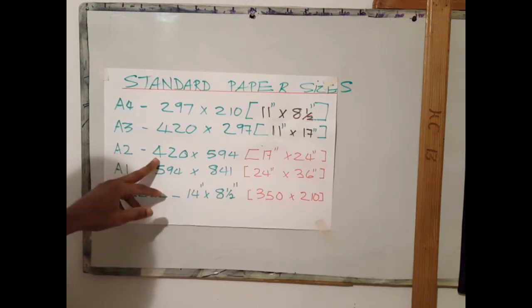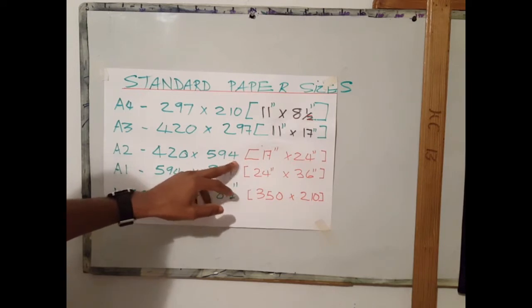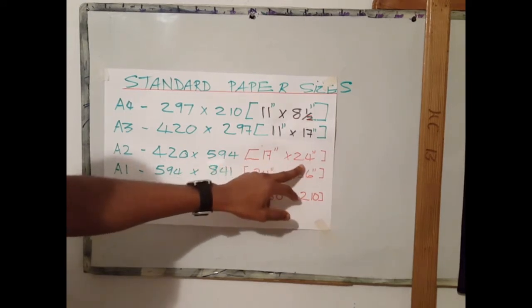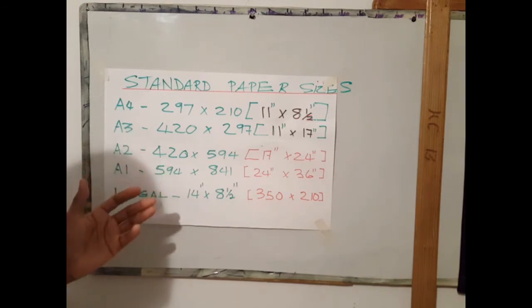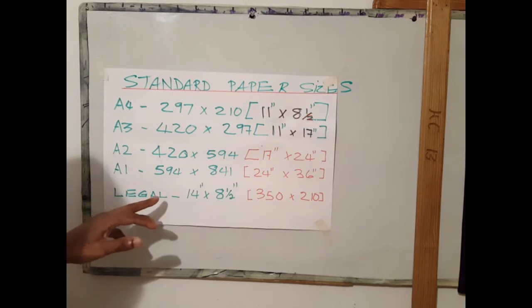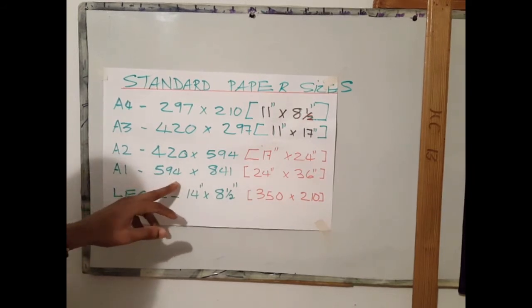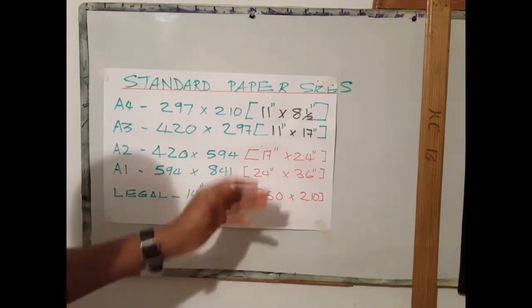A2 paper is 420 millimeters by 597 or 17 by 11 inches. This is more common for architectural drawing for buildings. A1 has a dimension of 594 millimeters by 841 millimeters. This is 24 by 36 inches.